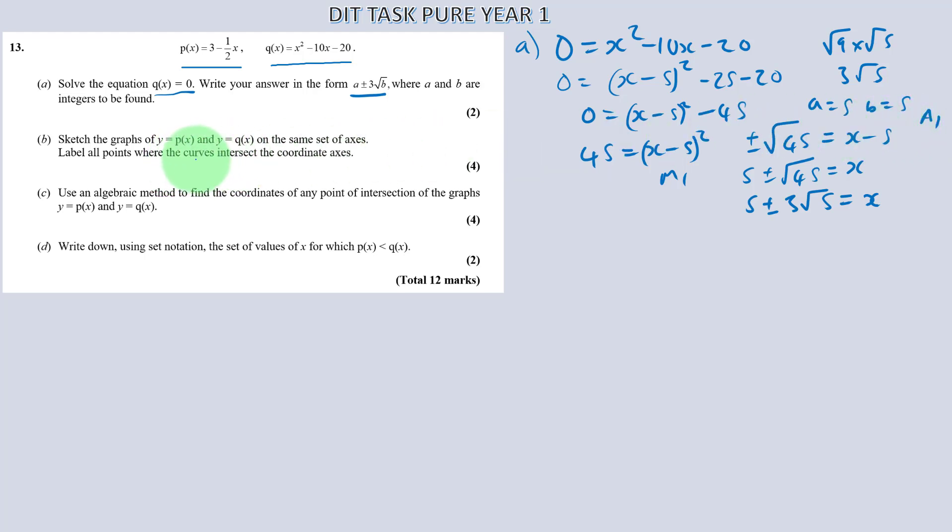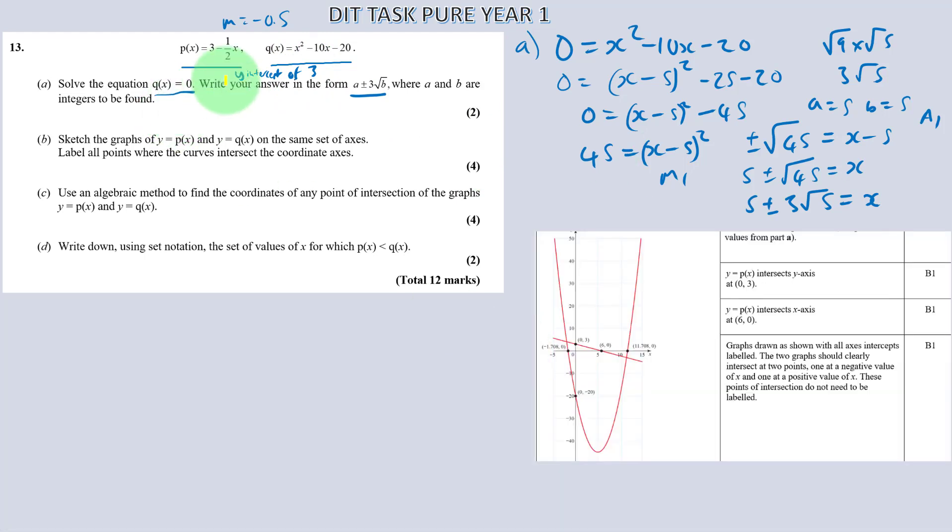Part b. Sketch these graphs on the same set of axis. Label all the points where the curves intersect the coordinates in axis. So 3 minus a half x. That's a gradient of m equals minus 0.5 with a y intercept of 3. So this should be easy to write as a straight line which is here. Negative gradient. Obviously solve. So you need to solve for y equals 0. So if 0 equals 3 minus a half x. A half x is going to equal 3. So x must equal 6. Hence you get this point here. That's easily done.